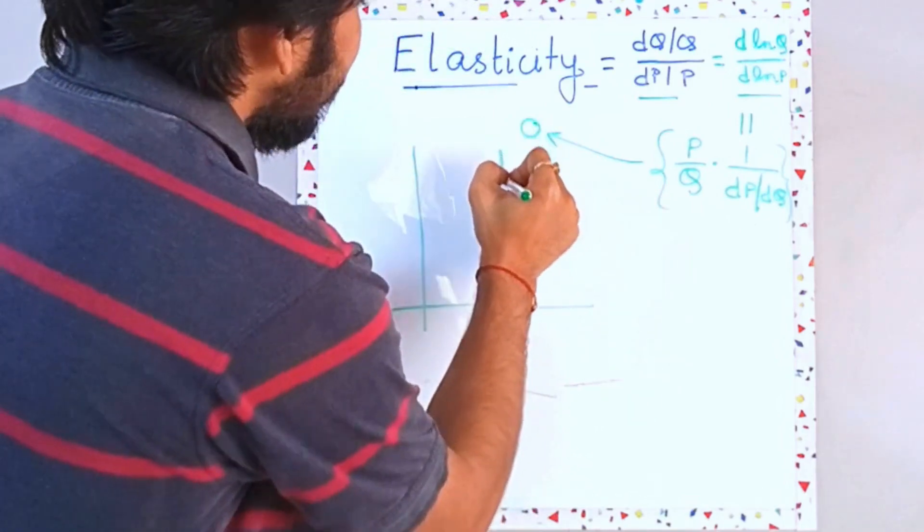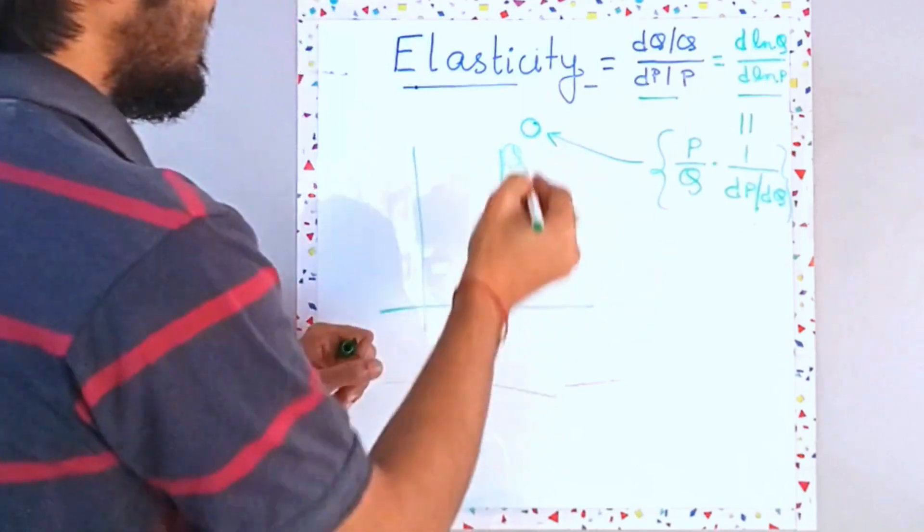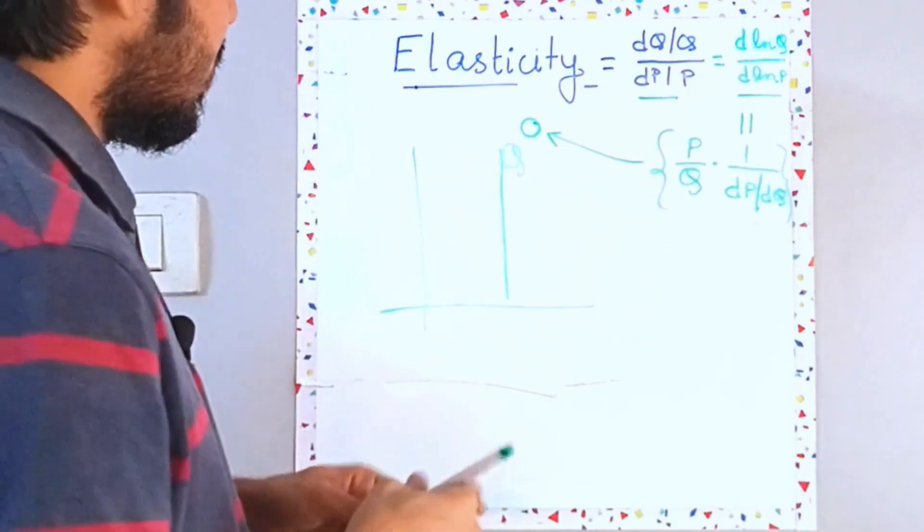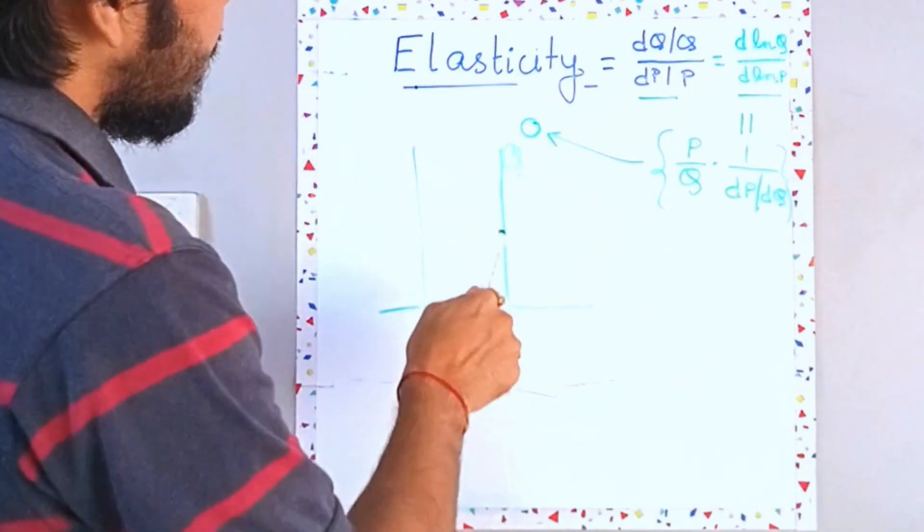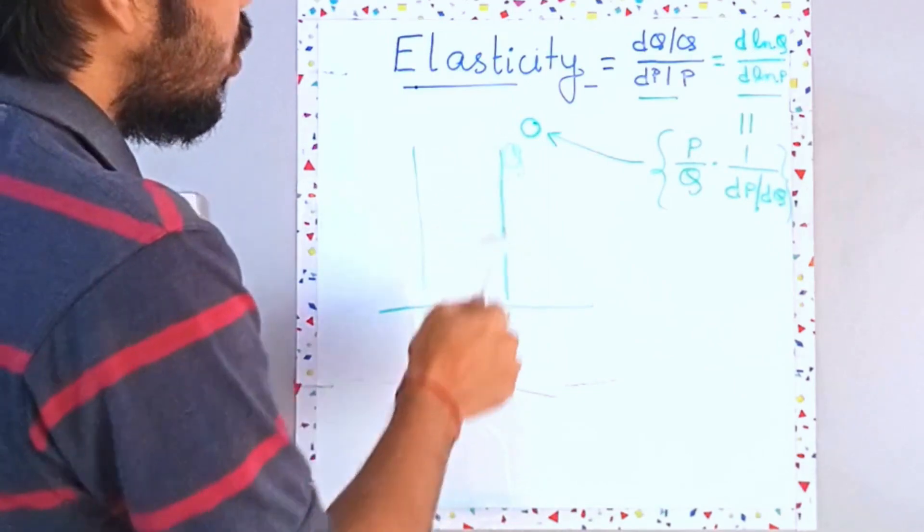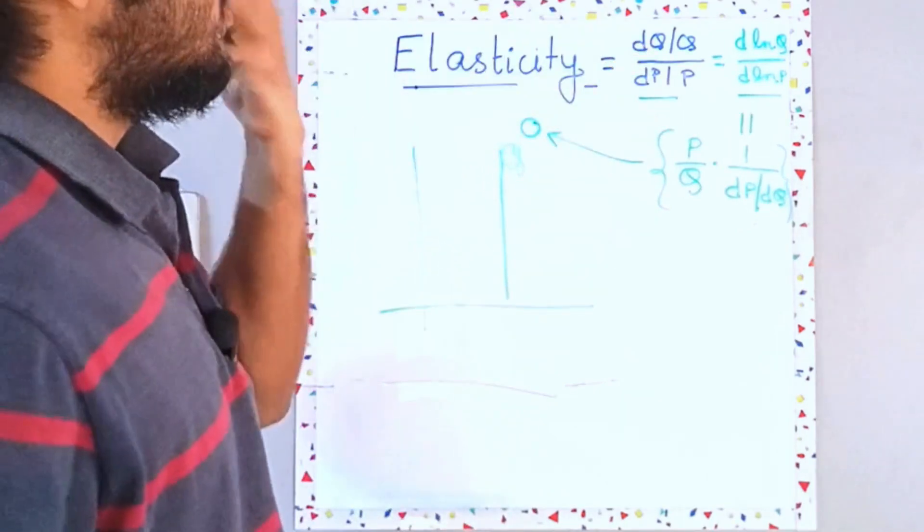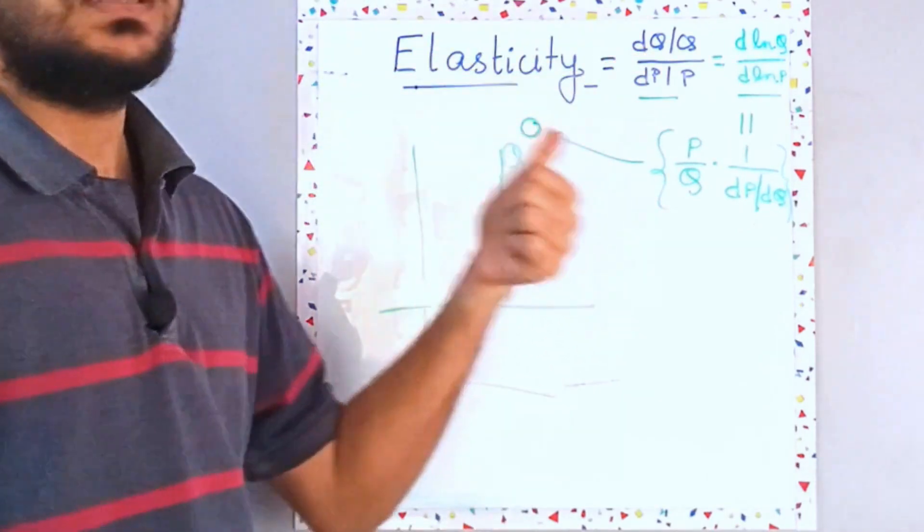If this is your demand curve, Q, in that particular situation, no matter what the price I give you, you will have the same amount of Q demanded. So delta Q will be zero, which means dQ will be zero, which means elasticity is going to be zero.